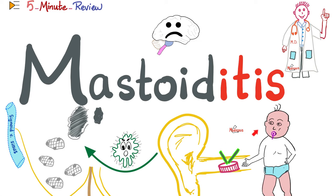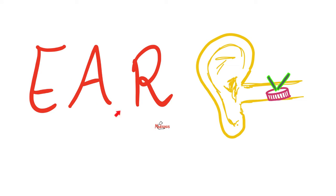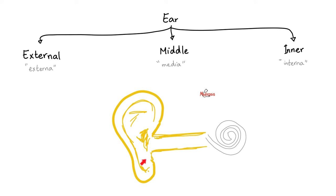Click the like button, click the subscribe button, and let's get started. Please watch the videos in this playlist in order. There is also another playlist called ENT — Ear, Nose, Throat. Quick review of the anatomy of the ear: we have the external ear, the middle ear, and the inner ear.